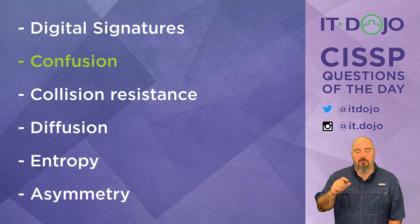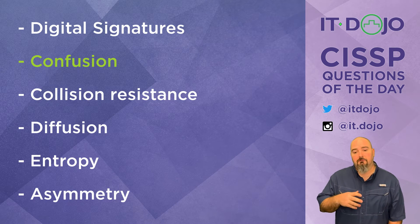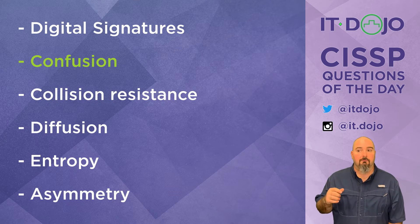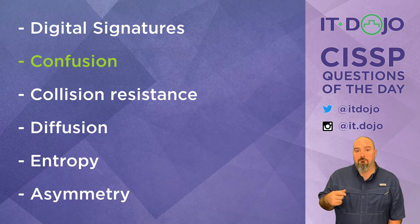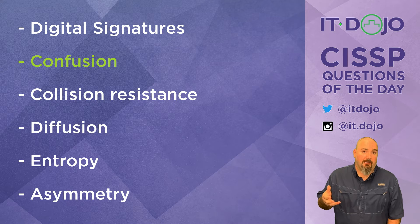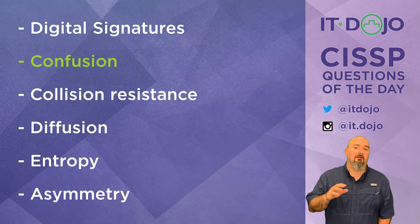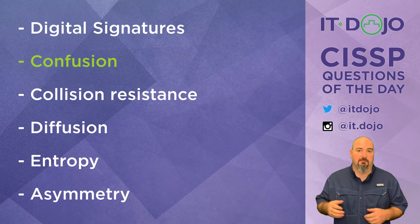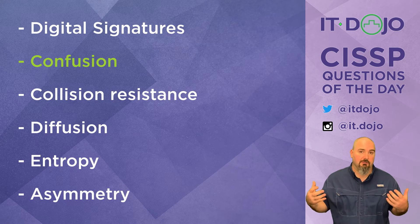We can make guesses about what data might be based on those redundancies. Also, protocols like Ethernet and TCP/IP have formalized structures, so we can predict certain values based on a preceding byte. We want to eliminate as much as possible any correlation an attacker could create between the key and the corresponding ciphertext. The most common way diffusion is achieved is through transposition — basically just jumbling things up.